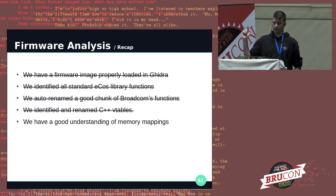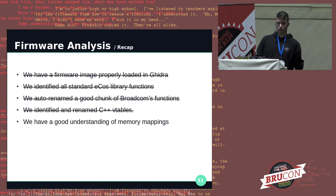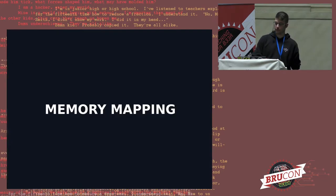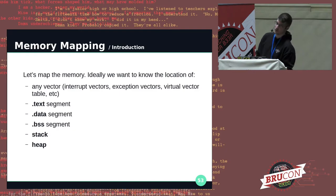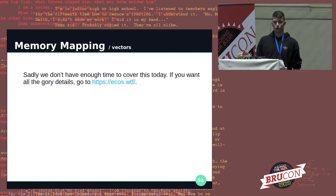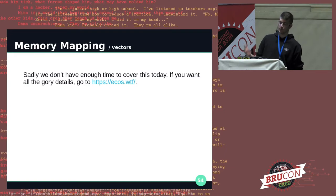Now that we've auto-renamed a good chunk of functions and identified and named C++ vtables, it's time to get a good understanding of the memory mapping — meaning how the firmware is loaded into RAM at runtime. Ideally, we'd like to know the address of vectors, the text segment, data segment, BSS segment, the stack, and heap locations.